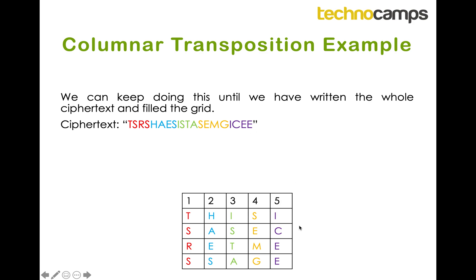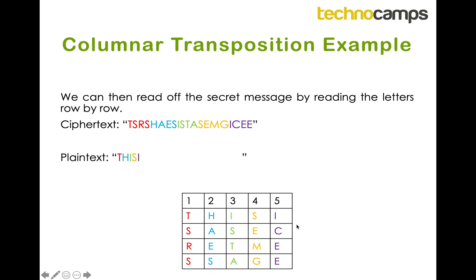I've now written my whole cipher text out into the grid. The next part is to read off the message row by row. I take the first row T-H-I-S-I and write that out, then the second row S-A-S-E-C, then the third row, then the fourth row. If you split it up and add some spaces, this secret message reads: 'this is a secret message'. We've decrypted the message.